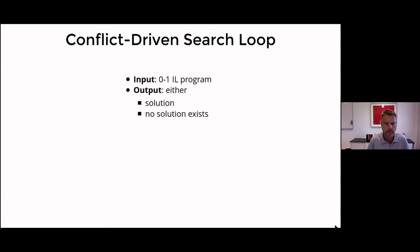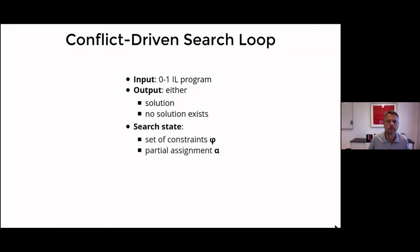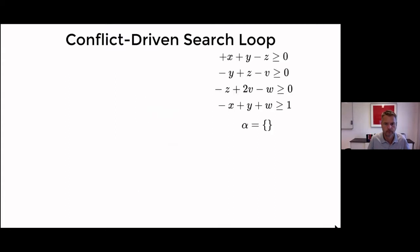One approach is to execute a conflict-driven search algorithm. Conflict-driven search is a depth-first search mechanism that derives implied constraints from conflicting search states and exploits them later. It maintains some set of constraints phi and a partial variable assignment alpha. Initially phi is the set of input constraints and alpha is the empty assignment, but during search phi and alpha will grow and shrink. Let's solve our example using conflict-driven search.